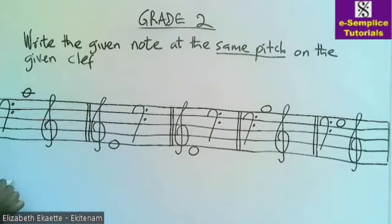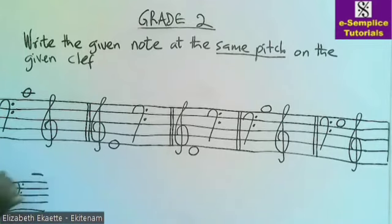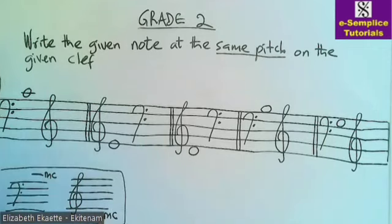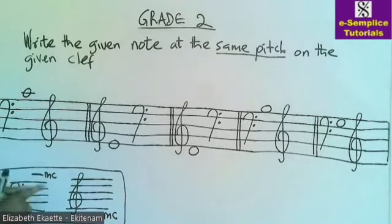Remember, when you write on the bass clef, this is middle C. But on the treble clef, this is middle C. This is your guide to answering this question, because you are writing the note at the same pitch on the other clef. You should read the note in relation to middle C, because that is your guide.